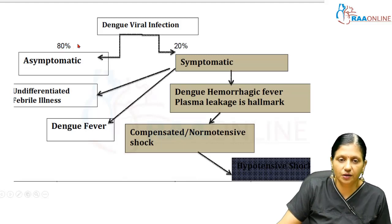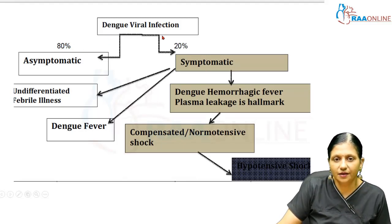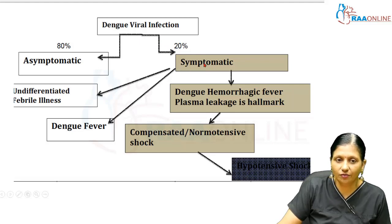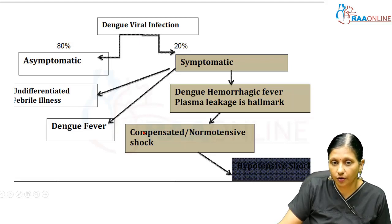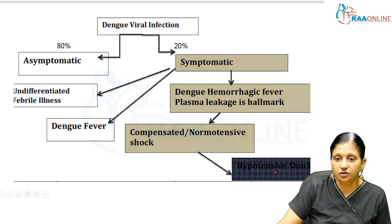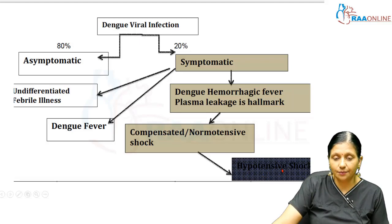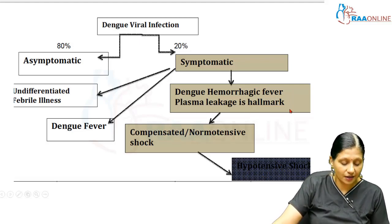During pregnancy, 80% of people who get Dengue will be asymptomatic. Of the 20% who are symptomatic, some will develop fever, a few will develop Dengue hemorrhagic fever, and a few will develop Dengue shock syndrome, which can progress from compensated to uncompensated (hypotensive) shock. The hallmark of Dengue hemorrhagic fever is plasma leakage.